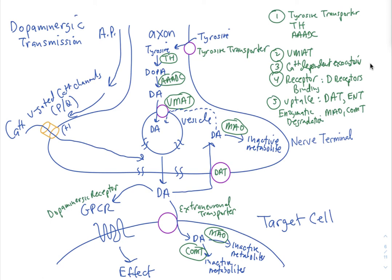We're going to talk about dopaminergic transmission, referring to the neurotransmitter dopamine. Remember that the first step of neurotransmission is synthesis. We have tyrosine, which is the precursor for dopamine, and that has to be taken up into the nerve terminal by tyrosine transport mechanisms.